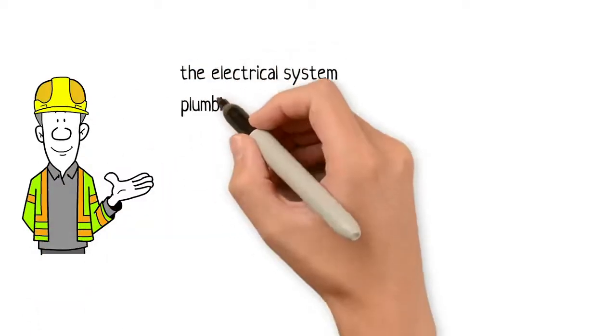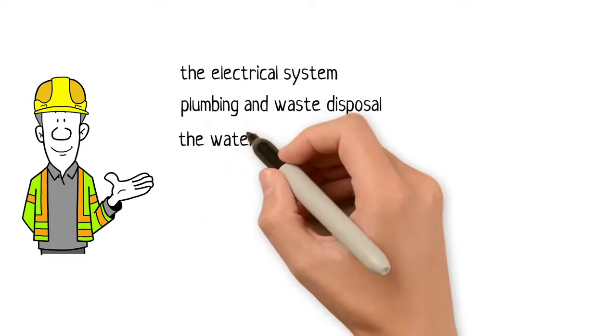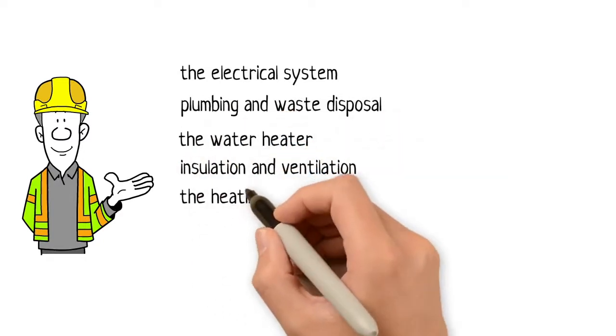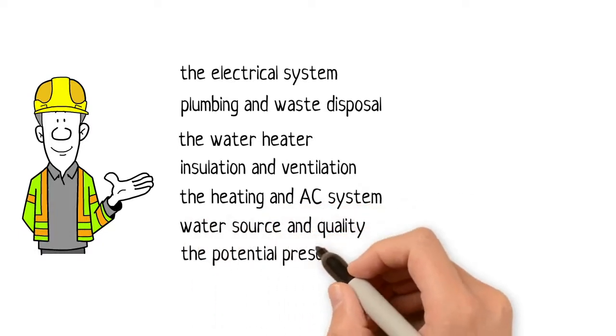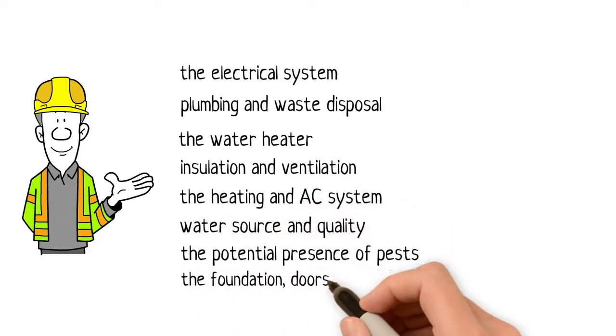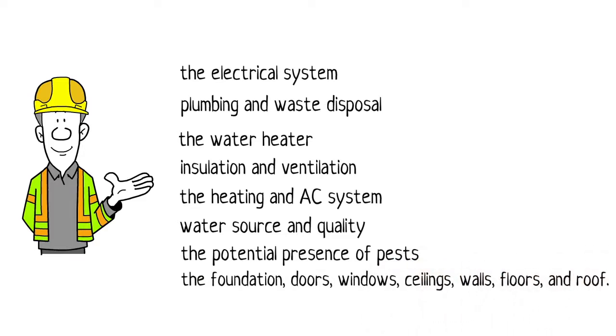The electrical system, plumbing and waste disposal, the water heater, insulation and ventilation, the heating and AC system, water source and quality, the potential presence of pests, the foundation, doors, windows, ceilings, walls, floors, and roof.